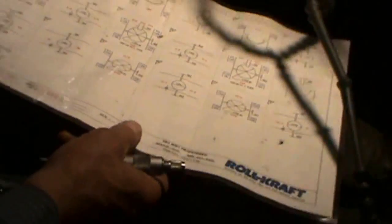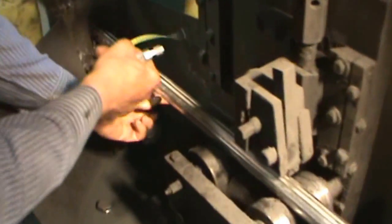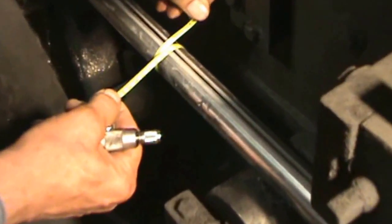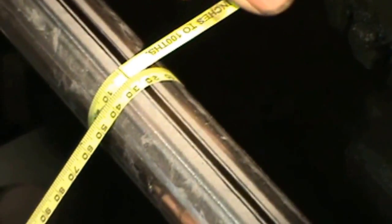Now's the time to check our weld tube size from the setup chart. Right here we have 1.270. There are a couple of different ways we can do that. First, we can use pipe tape, wrap it around, line the two up, and see exactly what we are for overall tube size—we're right on 1.270.